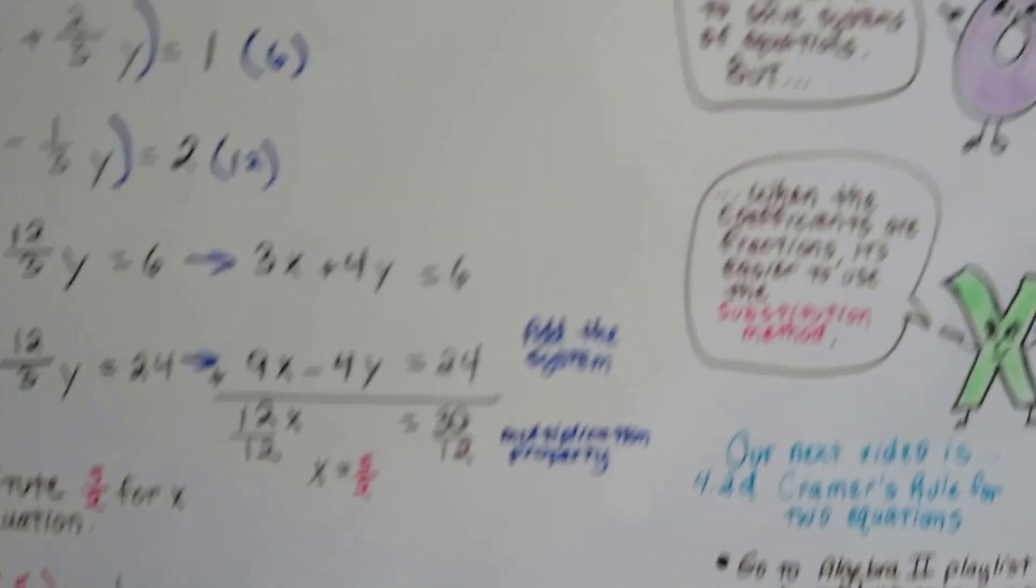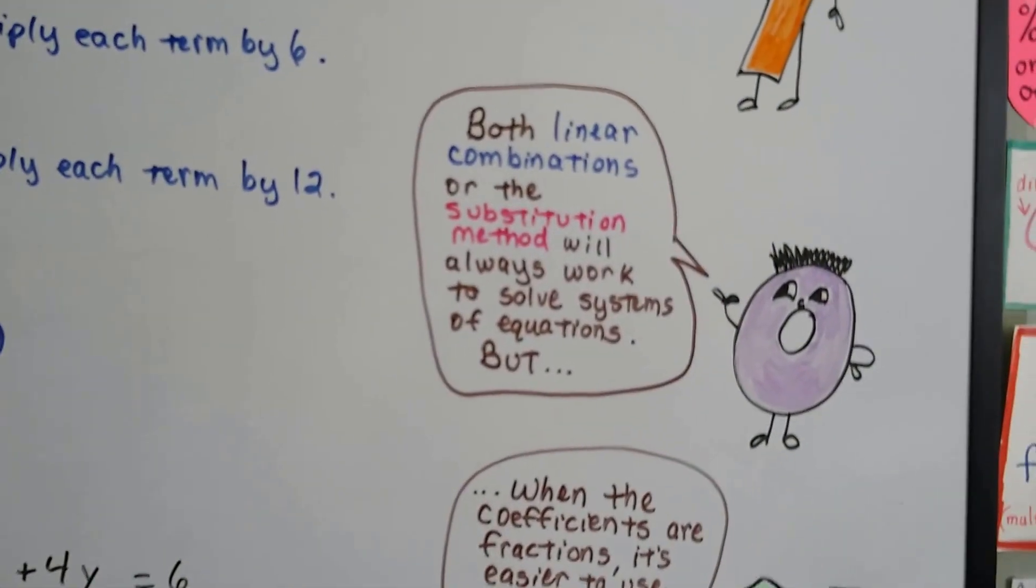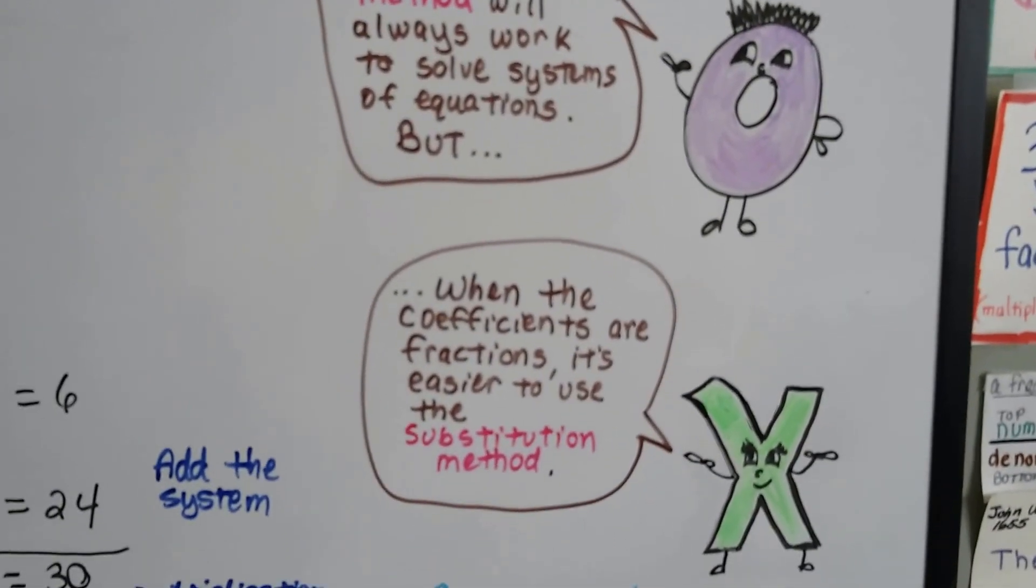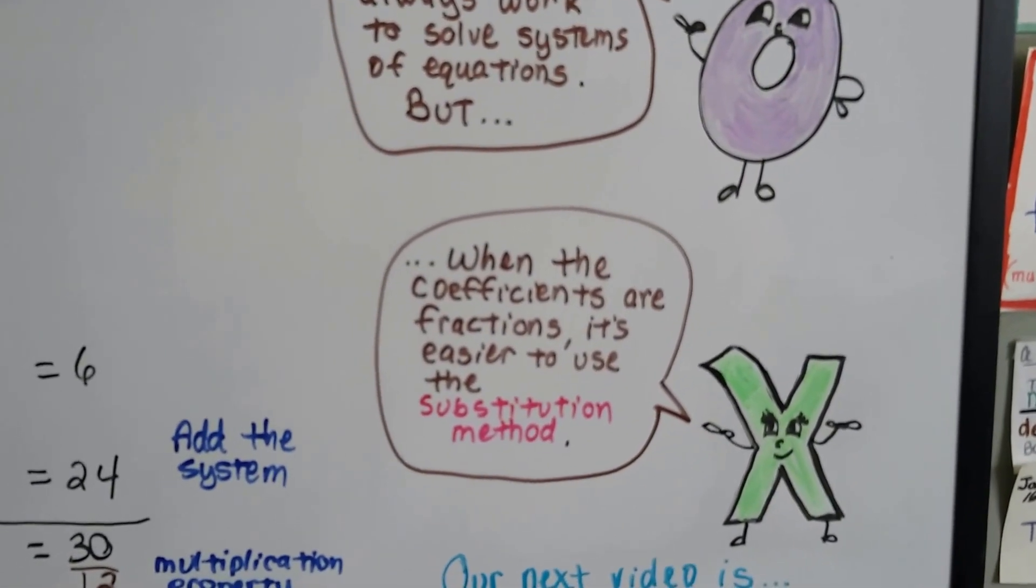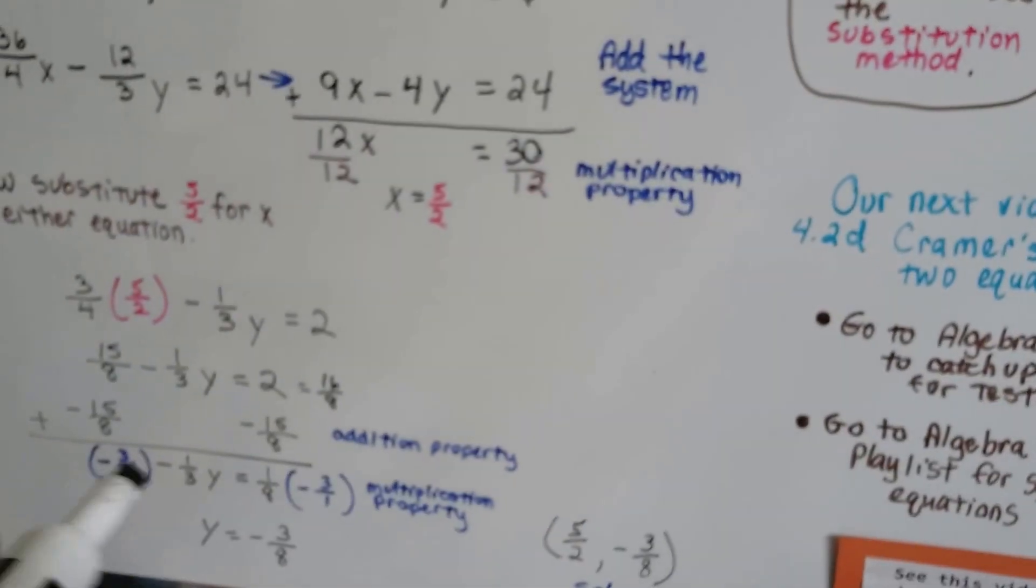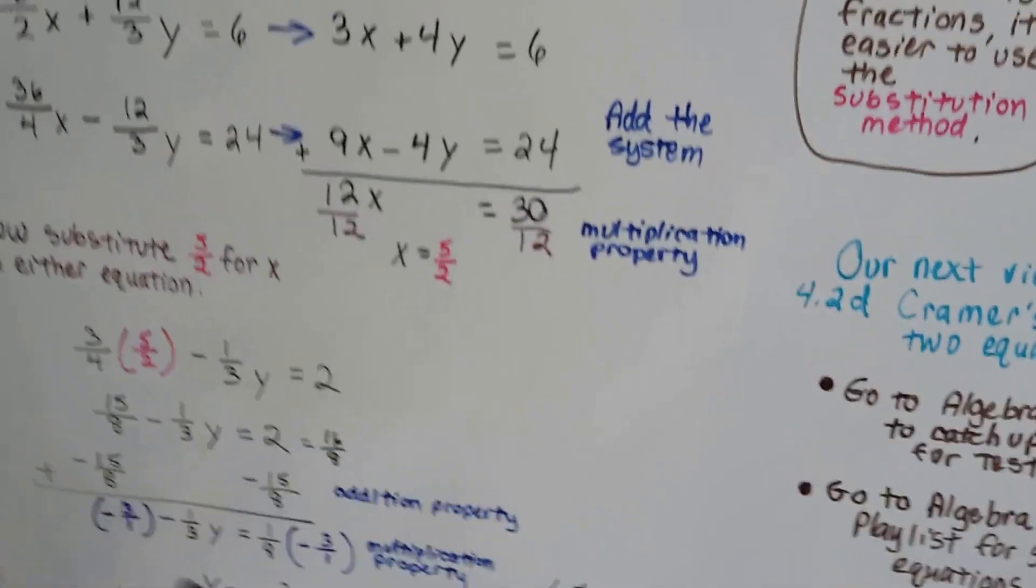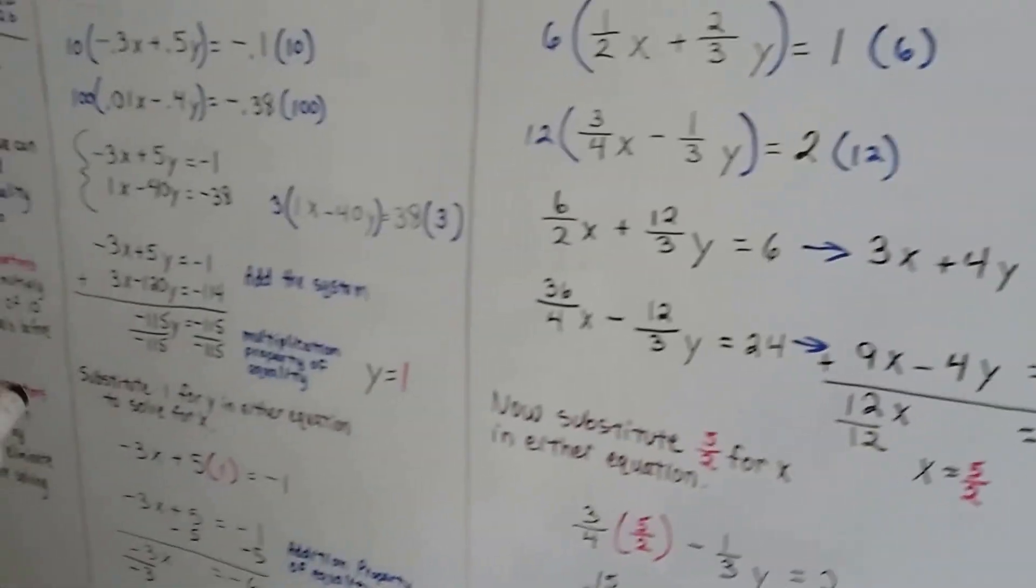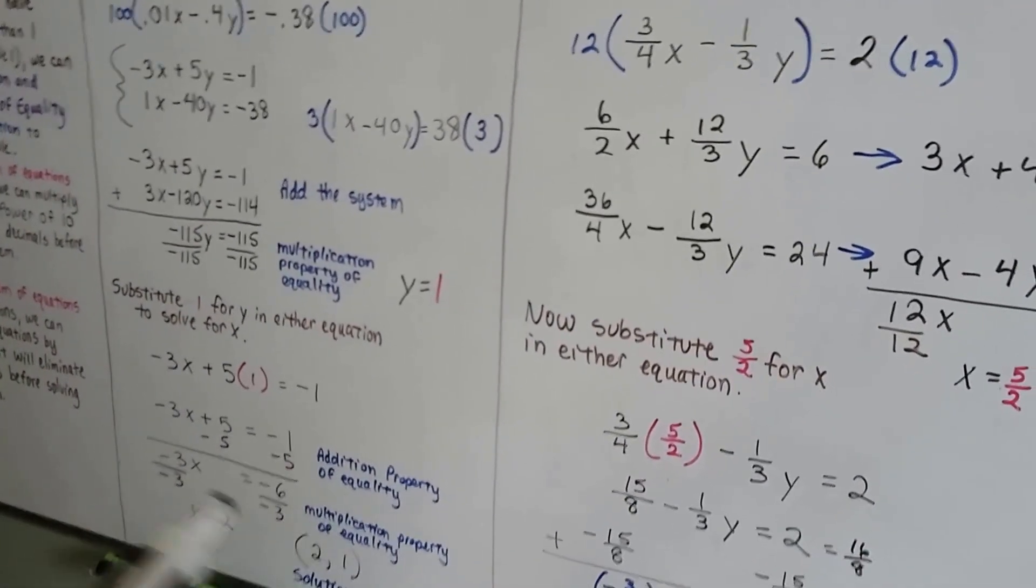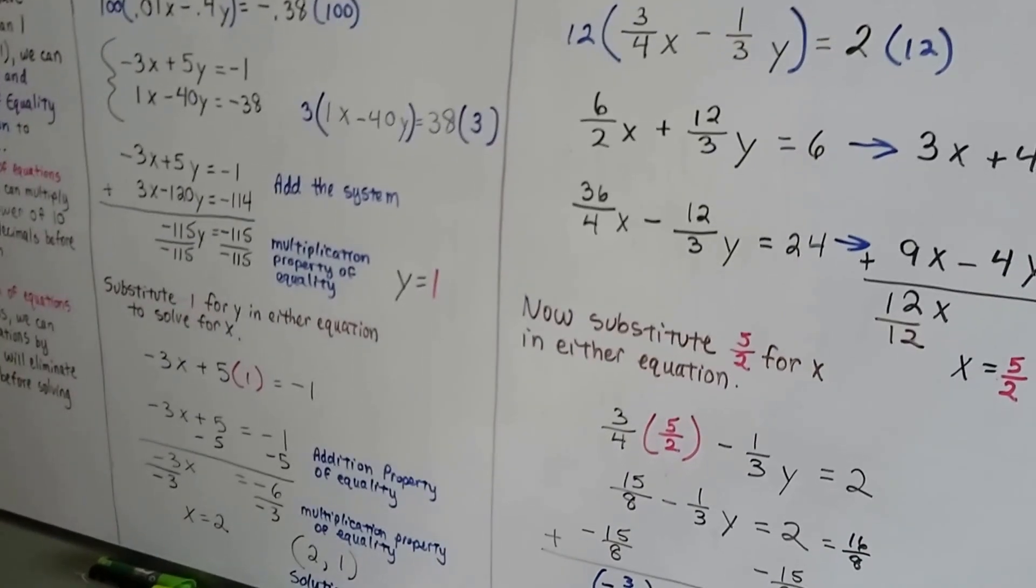Both linear combinations or the substitution method will work to solve systems of equations, but when the coefficients are fractions, it's easier to use the substitution method and multiply by the reciprocal when they're fractions. When they're not fractions, it's easier to just use division to simplify it.